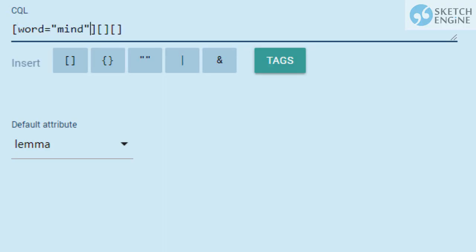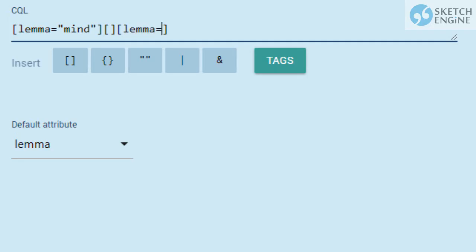If we want to find all forms of the verb, such as 'minds', 'minding', 'minded', we'll use lemma instead. Let's not set any criteria for the second token — it can be any word. And the last token will be the lemma 'business'.